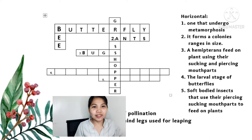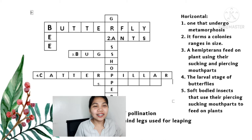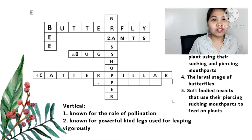Four: the larval stage of butterflies. You got it correct — caterpillar. Five: soft-bodied insect that uses their piercing, sucking mouth parts to feed on plants. Exactly — aphids.